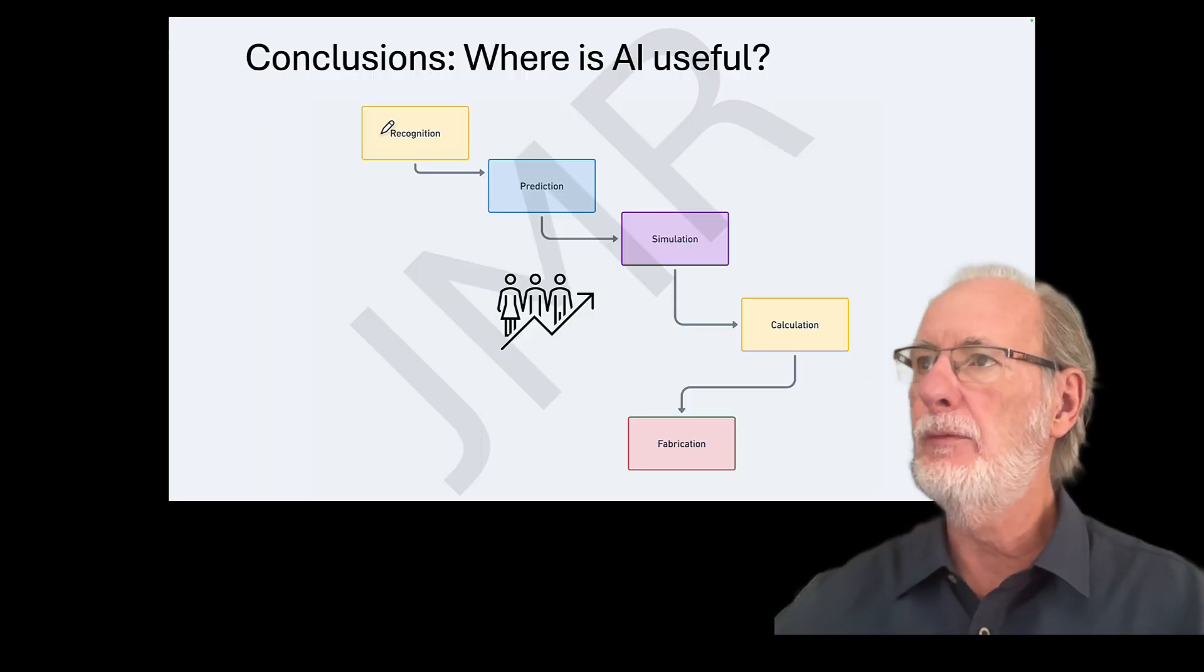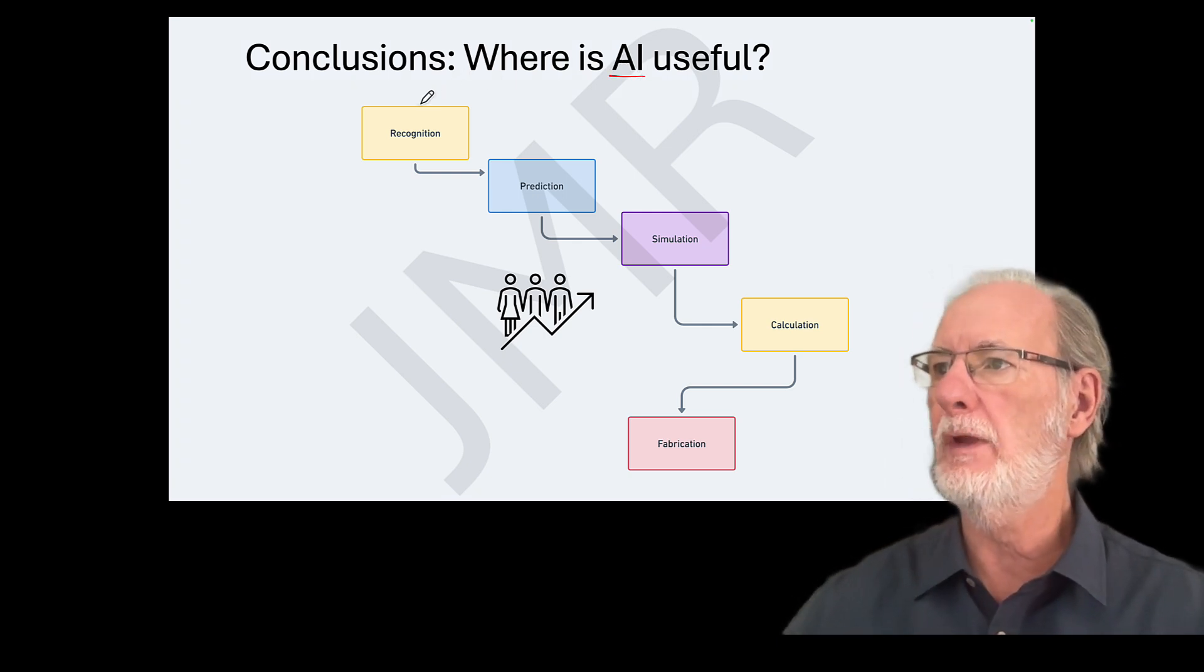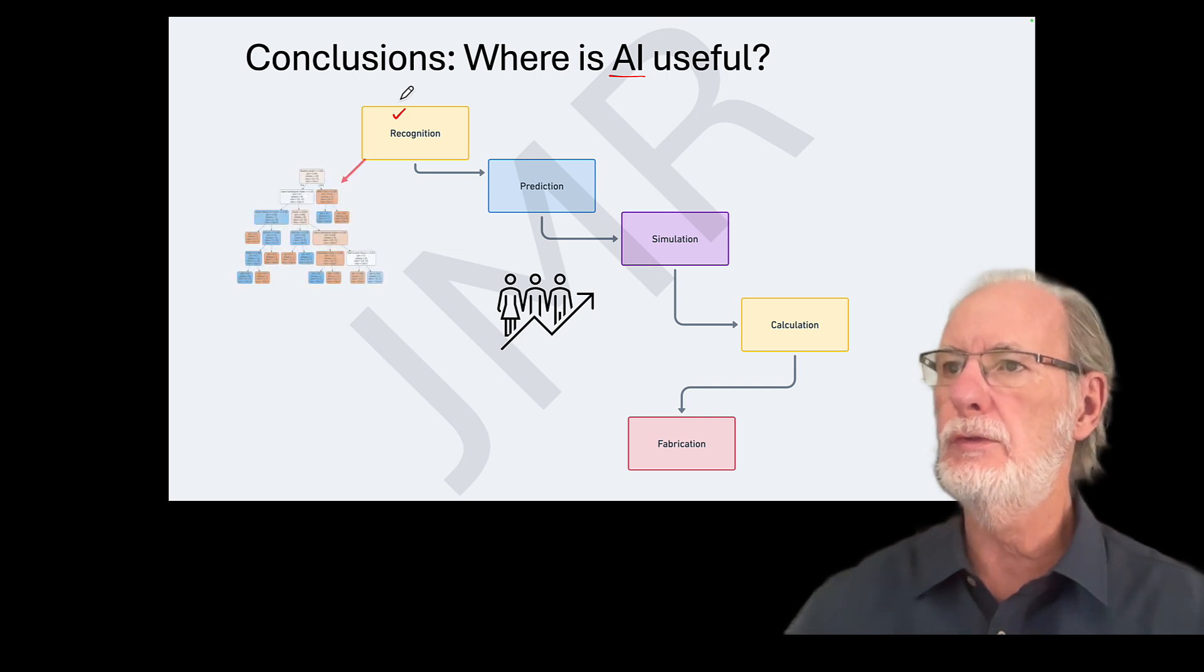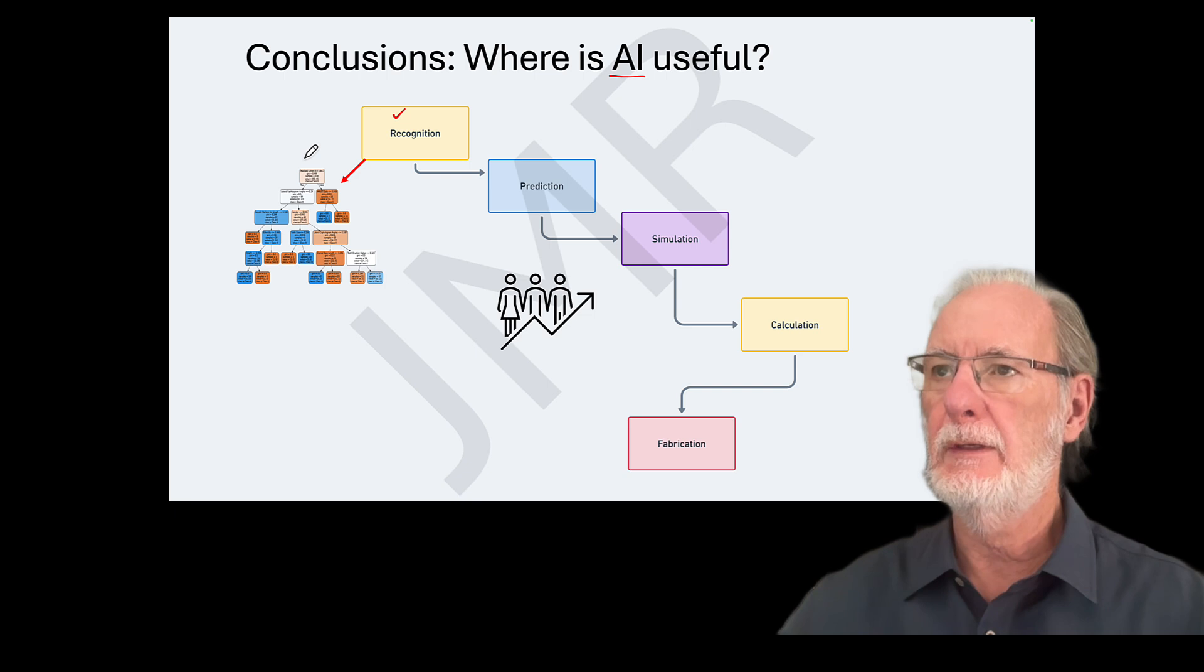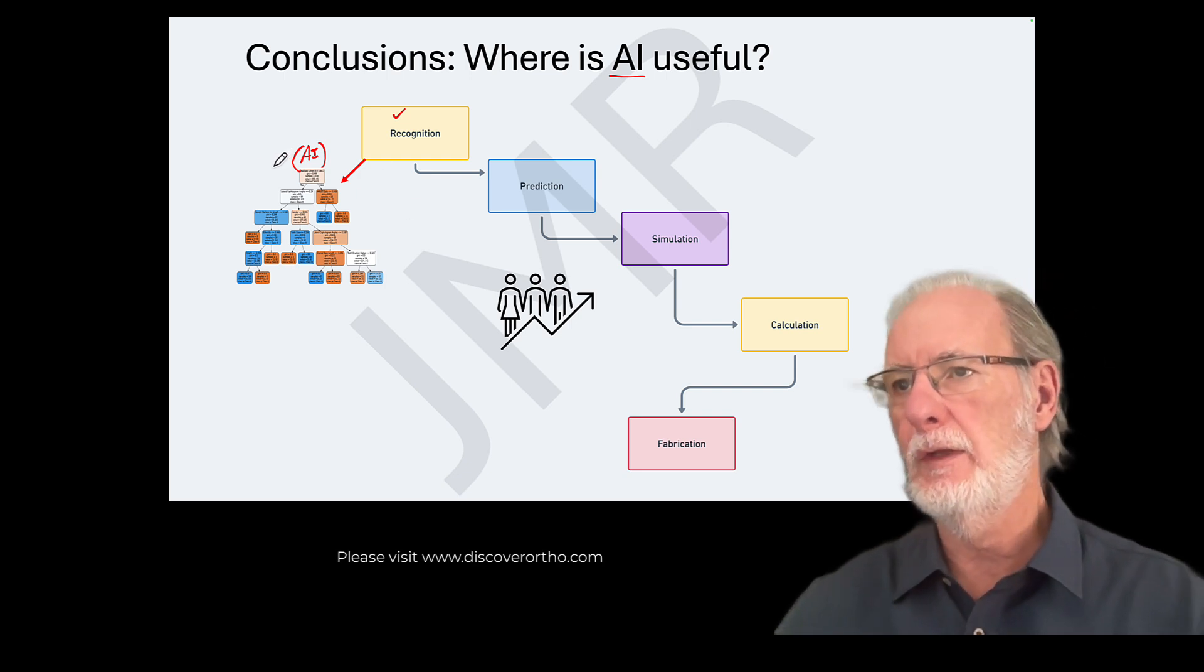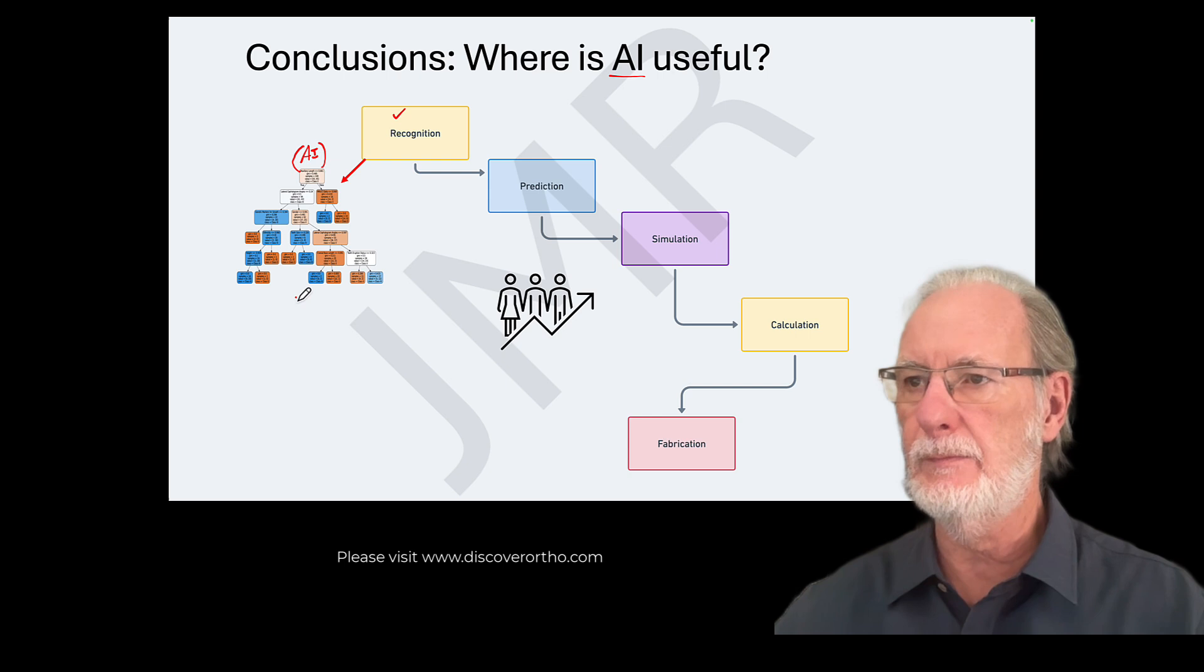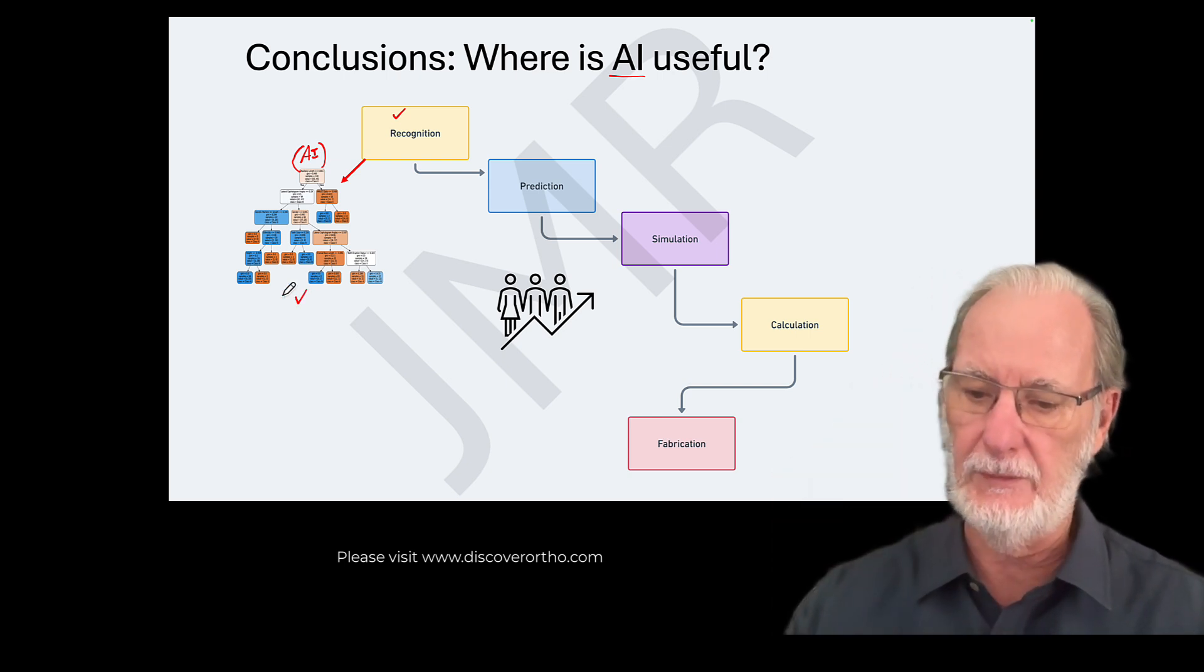So in conclusion, at the moment, where is AI useful? First of all, you recognize and classify malocclusion. You can use random forests. You can use all sorts of AI tools. Again, you don't need to know, but the machine learning will give you, depending on how many inputs you give, your input into the system will give you some prediction of classification.